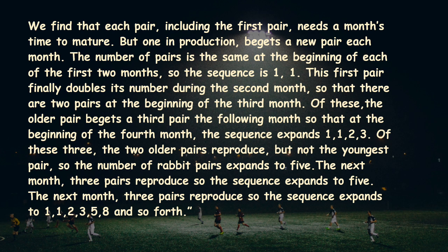Of these, the older pair gives birth to a third pair the following month, so that at the beginning of the fourth month the sequence expands: 1, 1, 2, and 3. Of these three, the two older pairs reproduce but not the youngest pair, so the number of rabbit pairs expands to 5. The next month, three pairs reproduce, so the sequence expands to 8, and so on and so forth.